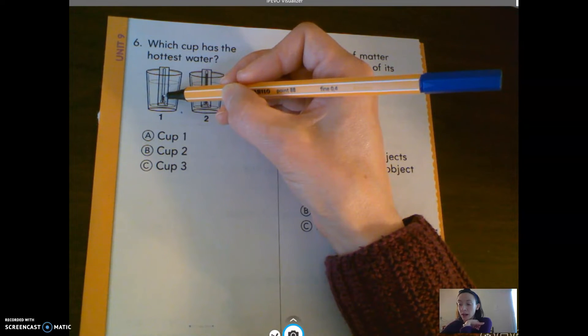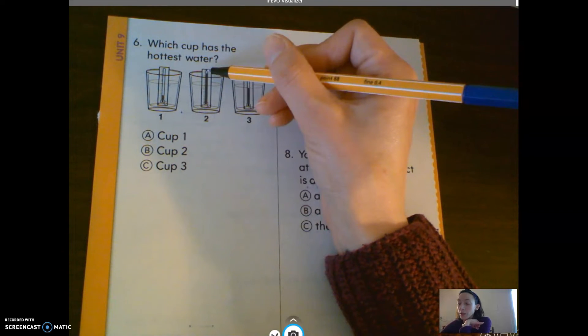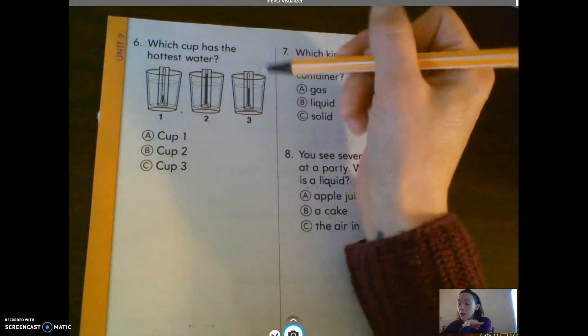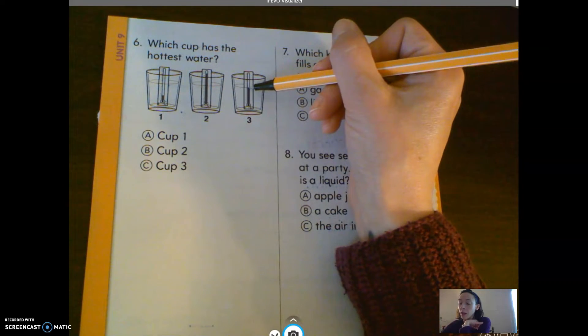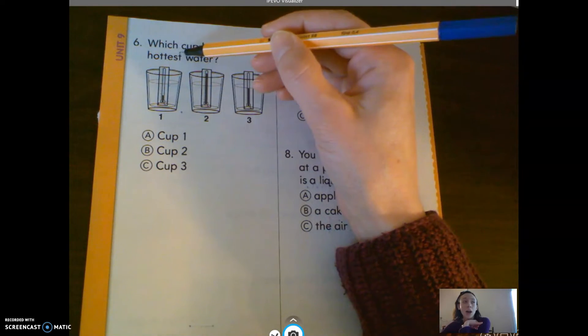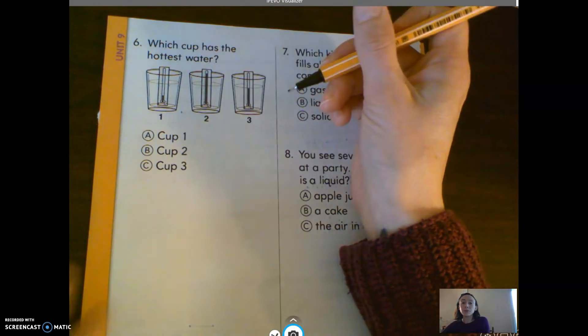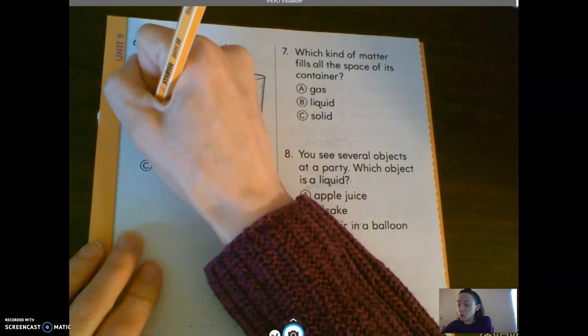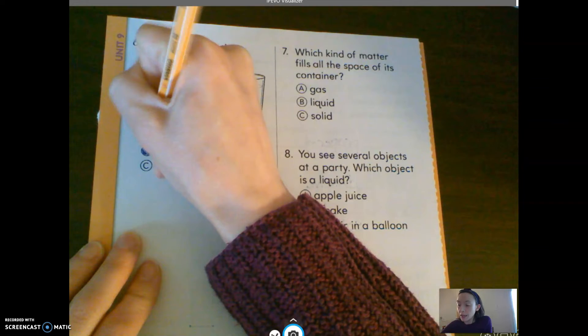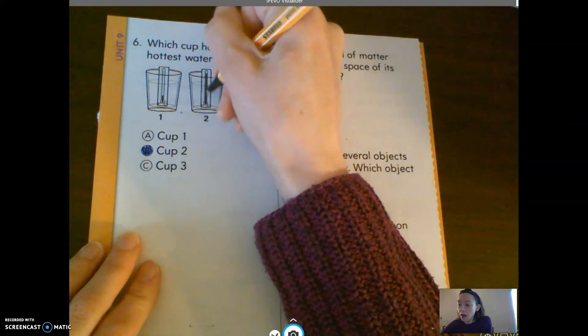So for example, this one, the mercury is way down there. This one, it's way almost up to the very top. And this one's just kind of right in the middle. So which of these would be the hottest cup of water? I would have to say number two, cup two. So B, because look how high that went.